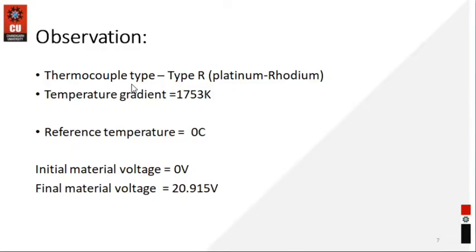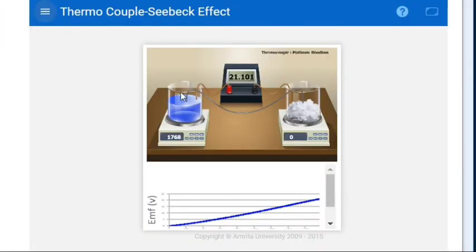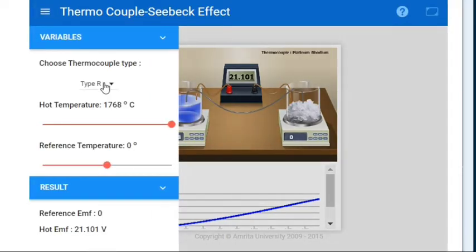Here you can see the observations I have taken in my readings. The thermocouple type I have used is platinum-rhodium. I already talked about the calculation and simulation part — I already told how to do the simulation part in my previous video. If you want to know how to do the simulation part, you can get that link in my description box.